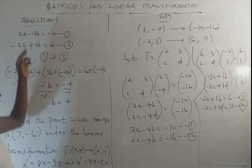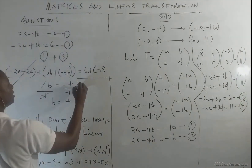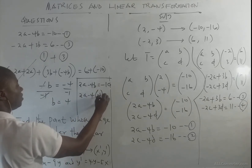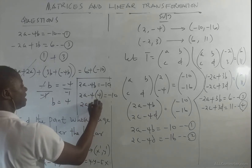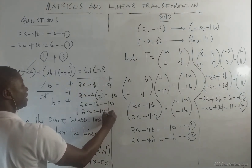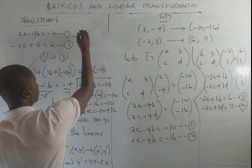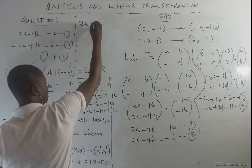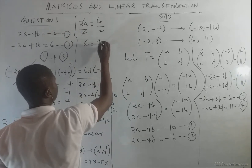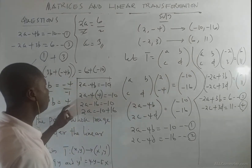Now that b = 4, substitute back into equation 1: 2a - 4(4) = -10, so 2a - 16 = -10. Grouping terms: 2a = -10 + 16 = 6. Dividing by 2, a = 3. So the value of a is 3 and the value of b is 4.